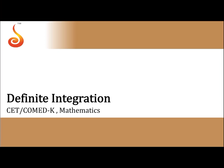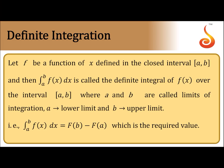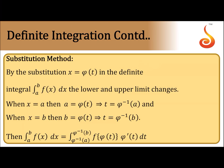Coming to definite integration: if f(x) is a function defined on the closed interval [a, b], then ∫ₐᵇ f(x) dx = F(b) − F(a), where F(x) is the antiderivative of f(x). For substitution in definite integrals, when x = φ(t), the limits change accordingly: as x varies from a to b, t varies from φ⁻¹(a) to φ⁻¹(b), and dx is replaced by φ′(t) dt.